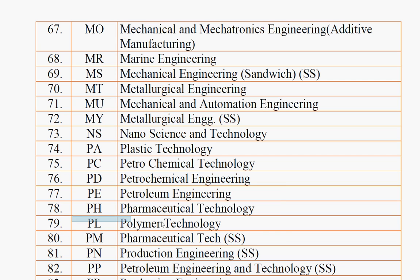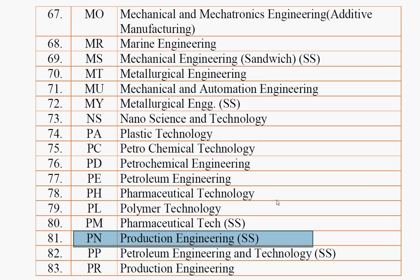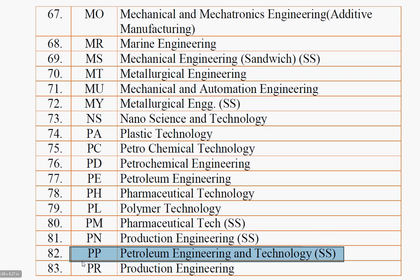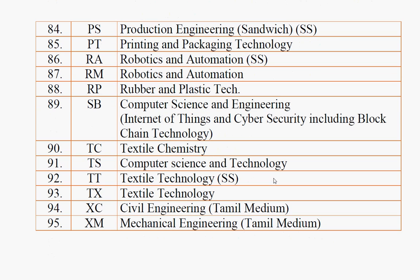Polymer Technology — PL. Pharmaceutical Technology self-supporting — PM. Protection Engineering self-supporting — PM. Petroleum Engineering and Technology self-supporting — PP. Production Engineering — PR. So 83 courses found. Protection Engineering — PS.